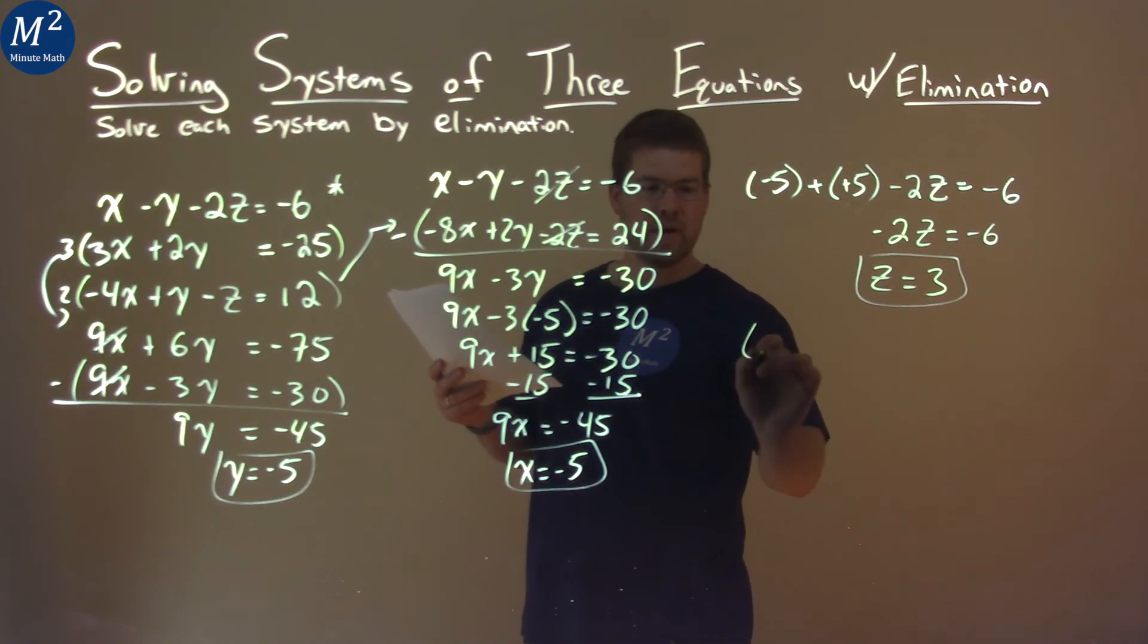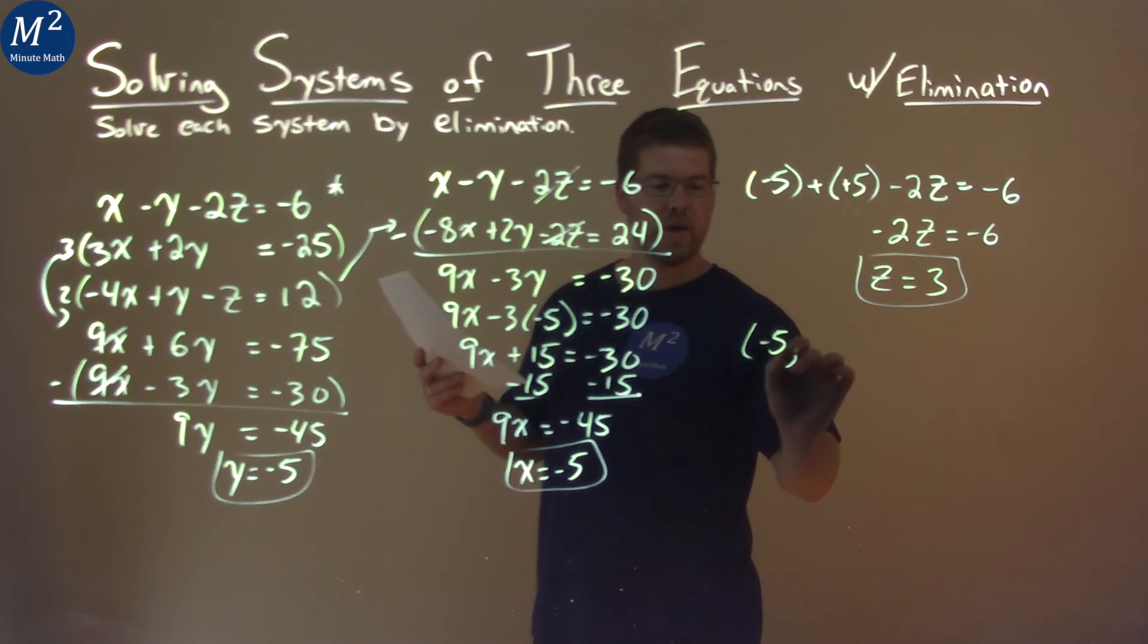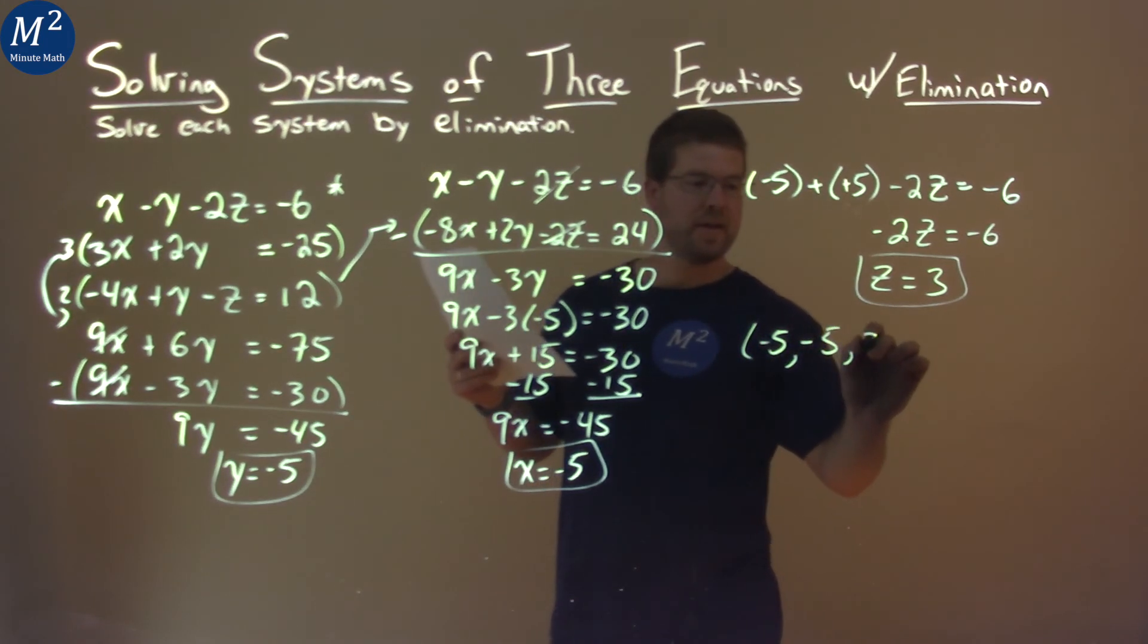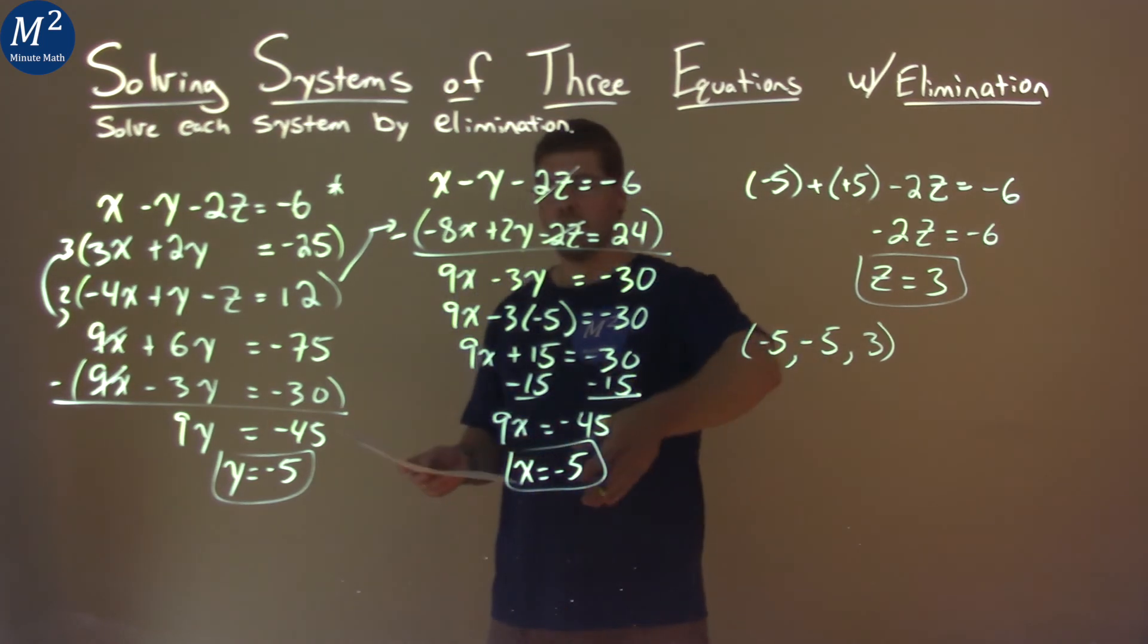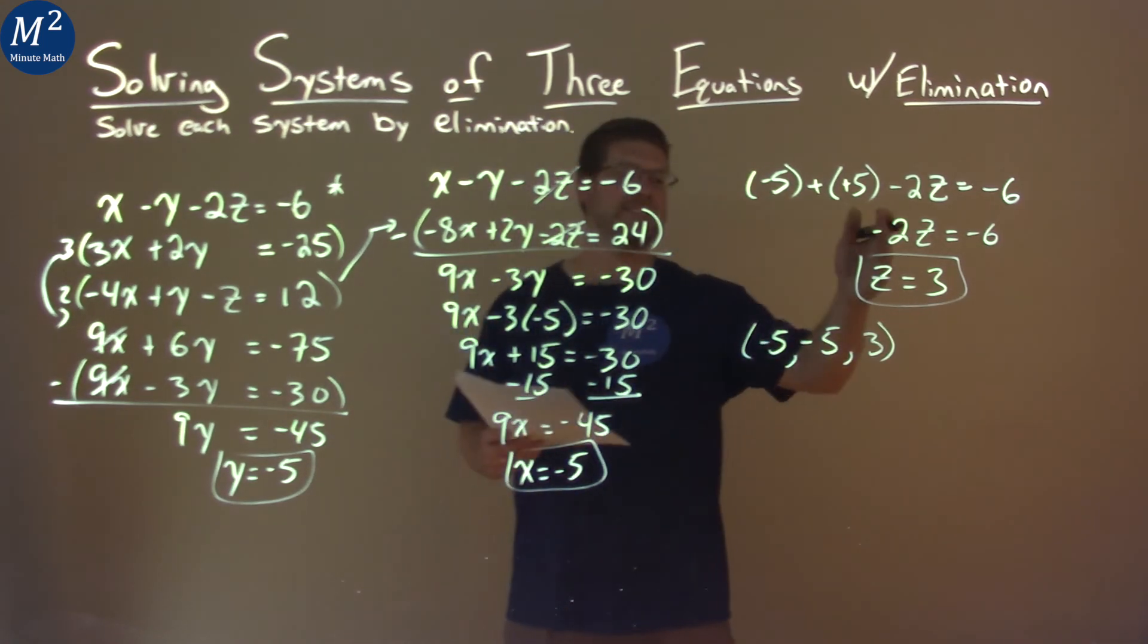So we have our three values. We write it as a coordinate point: negative 5 for x, negative 5 for y, and z is 3. That's our final answer. x is negative 5, y is negative 5, and z is 3.